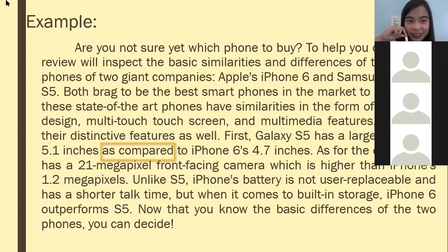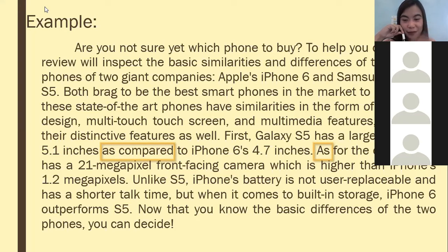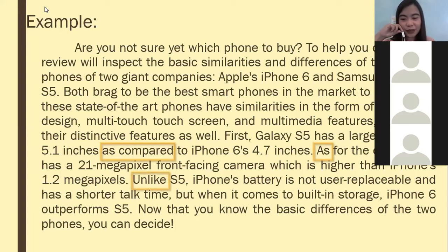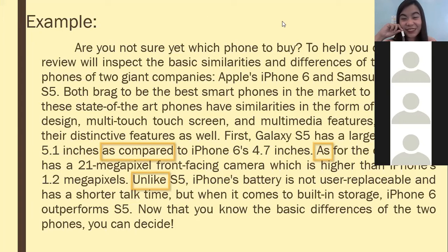Looking at the sample more carefully: 'as compared' is an example of a comparing signal word. 'Unlike' is a contrasting signal word. Those are the signal words used in the sample paragraph for comparison and contrast.